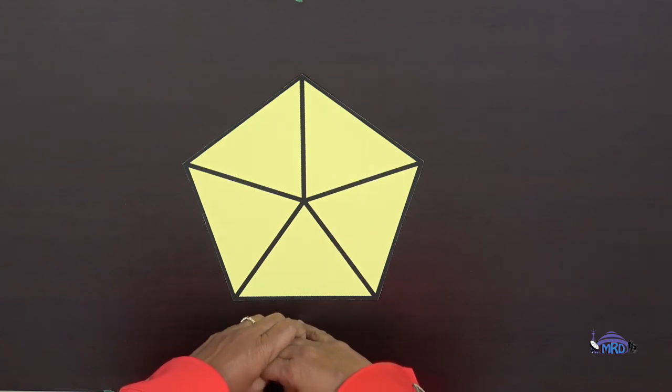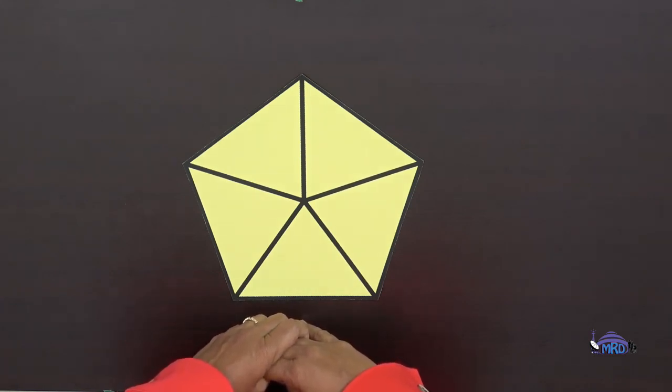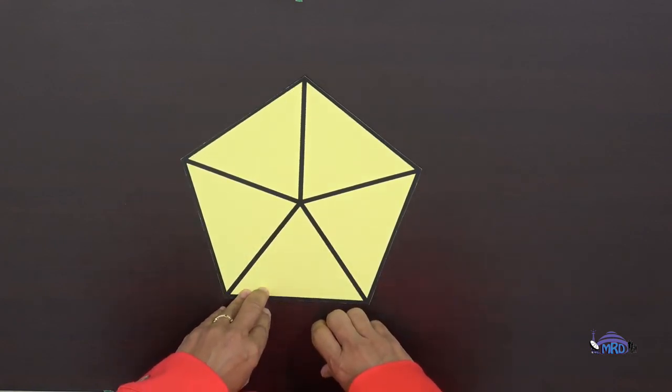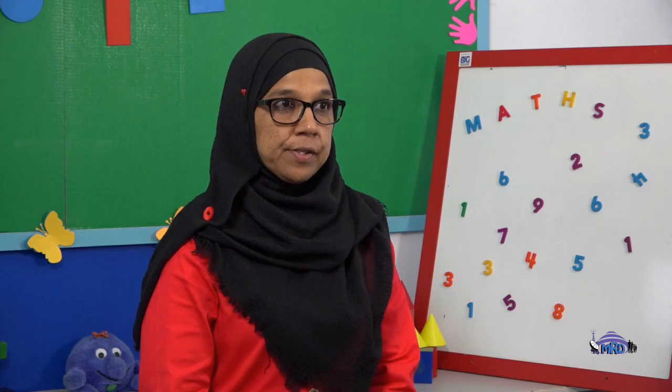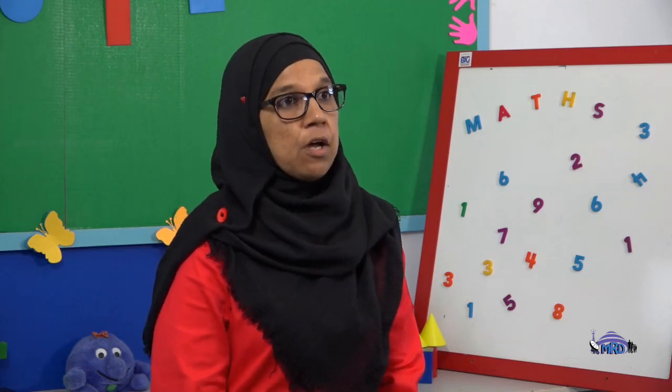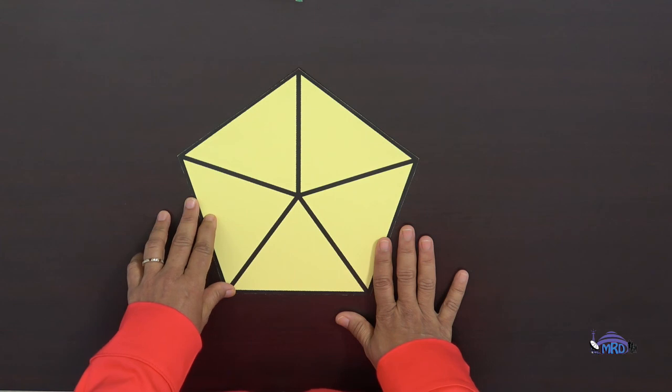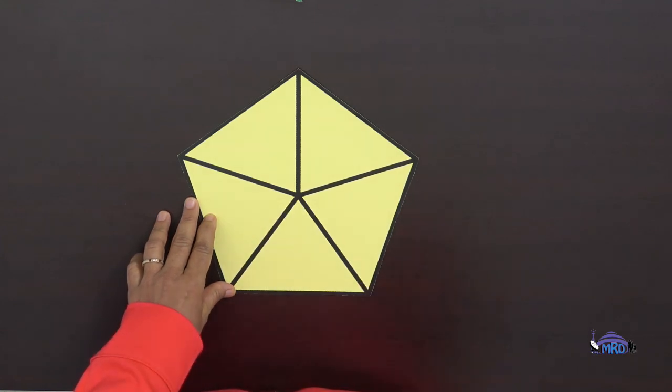One more shape. Let's see — fourths or quarters. Does this show fourths or quarters? One, two, three, four, five — five parts. Fourths or quarters? No, it does not. This does not represent fourths or quarters. For it to be fourths or quarters, you have to remember that it must be separated into one, two, three, four equal parts for it to be fourths or quarters.